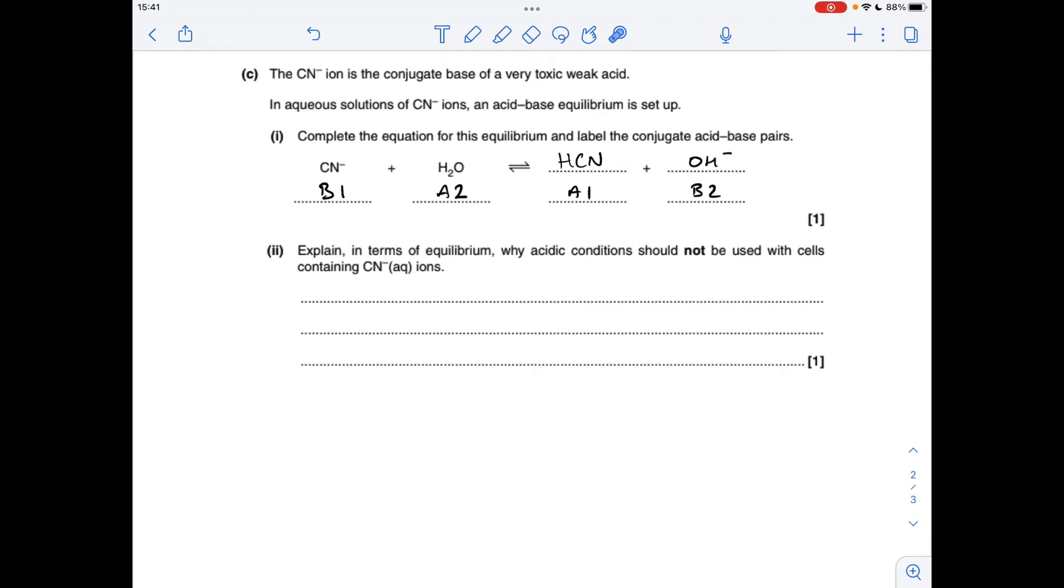Or you could say that the H plus ions would remove hydroxide ions and it would encourage the equilibrium over to the right-hand side, thus forming hydrogen cyanide.